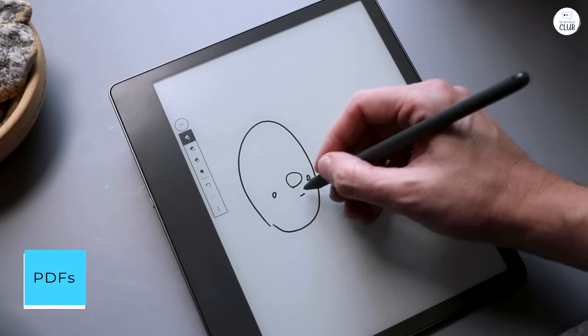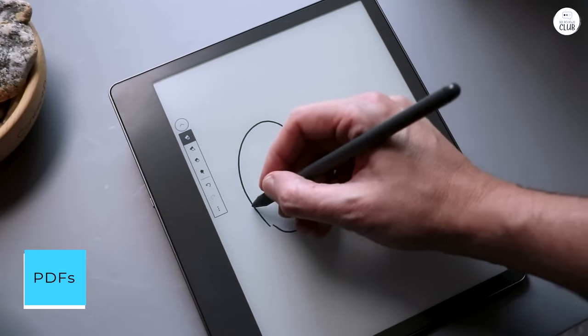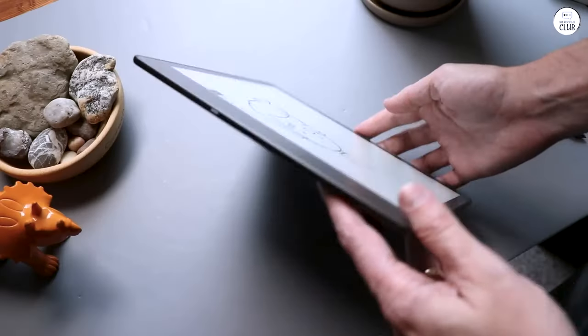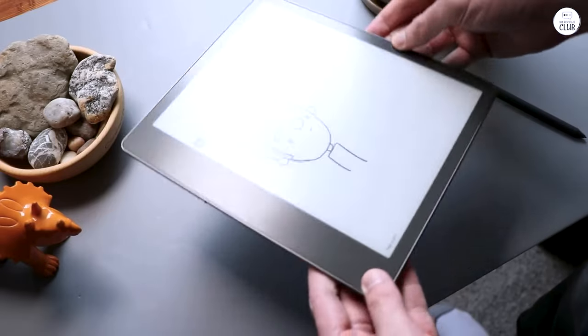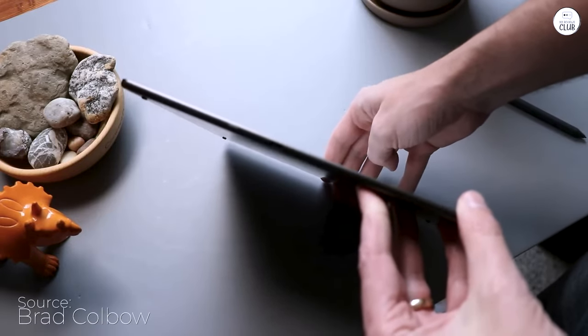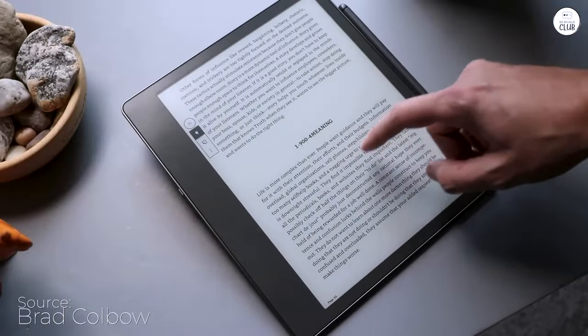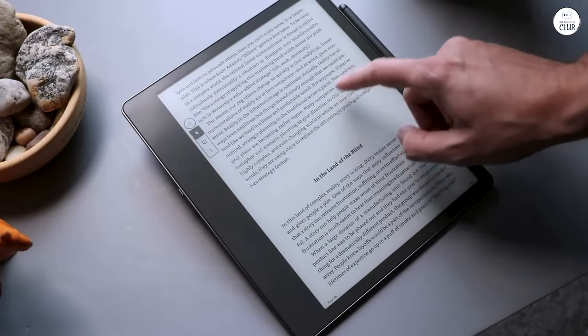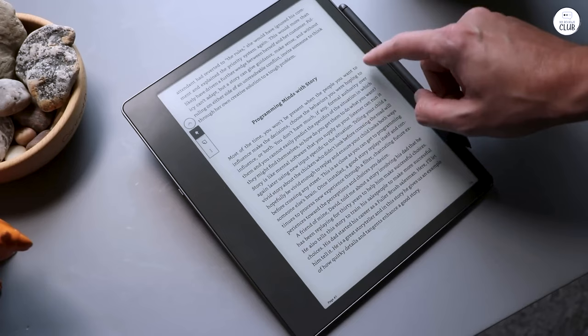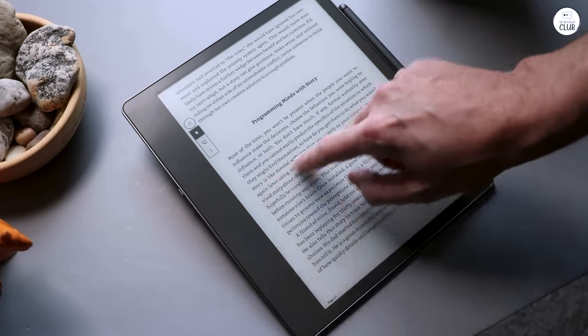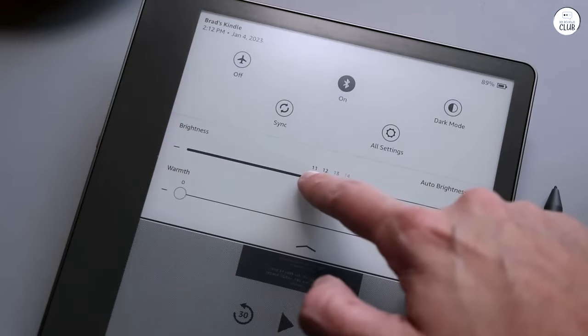PDFs. Being able to write on and highlight PDFs is a game-changer for grad school, so this is proving to be one of the more helpful features and part of why I got one. You can adjust the margins of the PDF depending upon if you want it more for reading or notes. I took notes on a PDF and sent it back to myself, then later pulled it up on my desktop for my research.